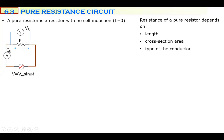Resistance depends on three things: the length of the conductor, the cross-sectional area or thickness of the conductor, and the type of conductor. These three things determine the resistance — whether it's 10 ohms, 20 ohms, or 100 ohms. One more thing can change resistance: temperature.